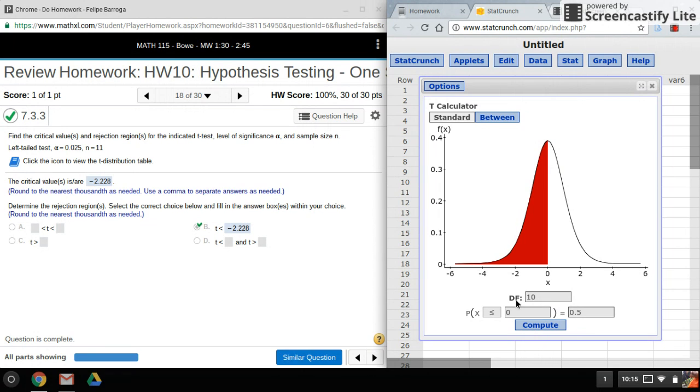That's what the DF stands for. Now for a one sample test the degrees of freedom will be the sample size minus one. So it just happens that my sample size is 11.